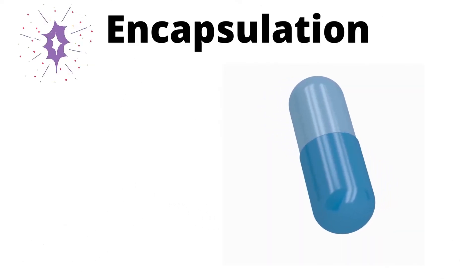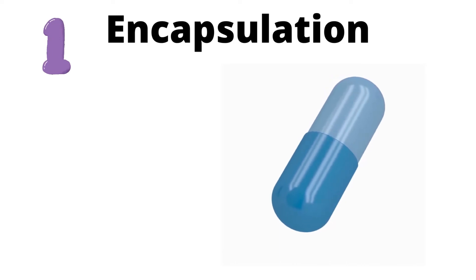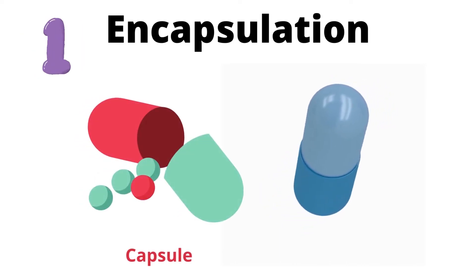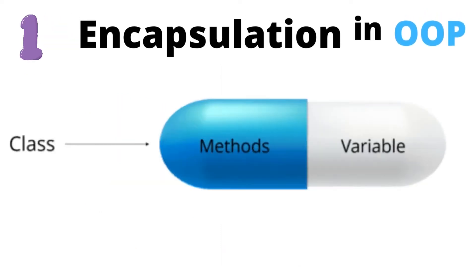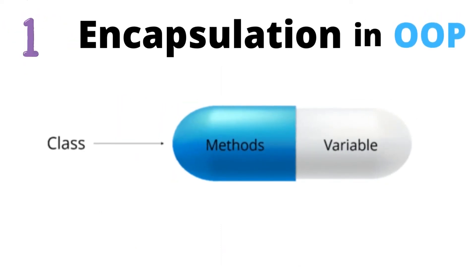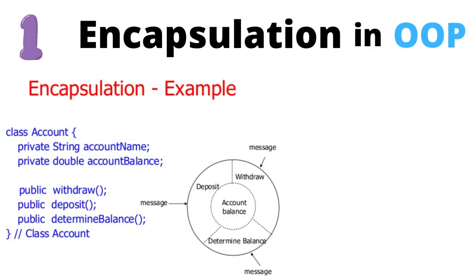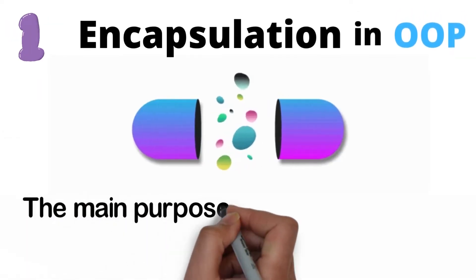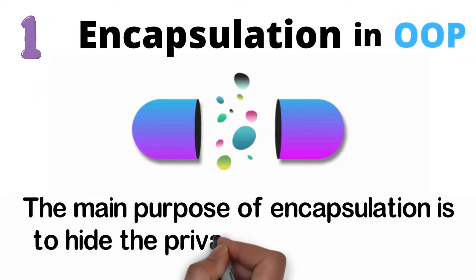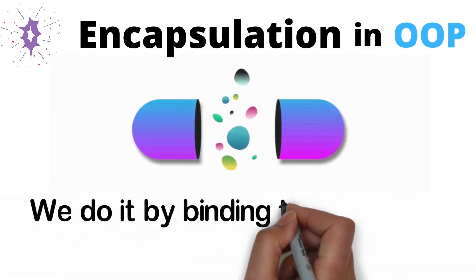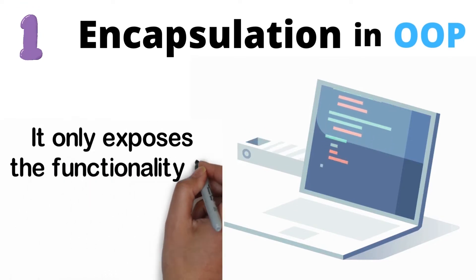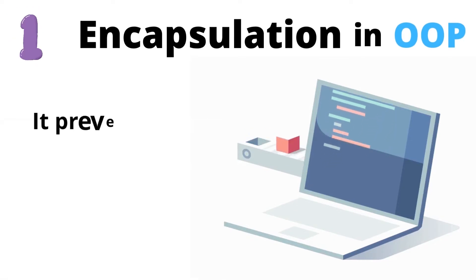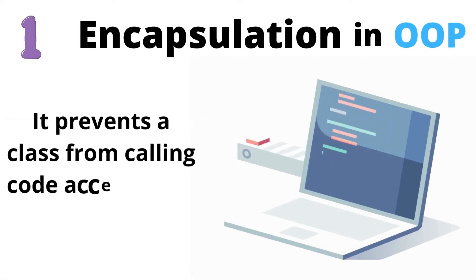1. Encapsulation. As the name suggests, encapsulation has a similar meaning to the word capsule — the term meaning to enclose something like a pill does inside its coating. In OOP, encapsulation refers to creating barriers around a class. It allows you to keep all the information in one place and distinguish it from the rest of the code. The main purpose of encapsulation is to hide the private details of a class. We do it by binding the data and functions within a single unit. It only exposes the functionality to the outside world, and it prevents calling code from accessing a class's private data.